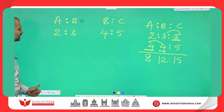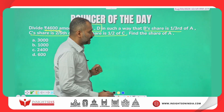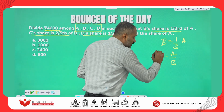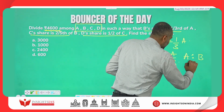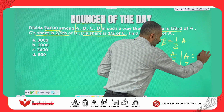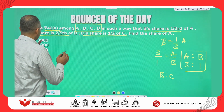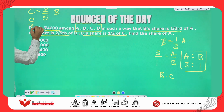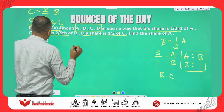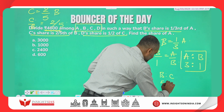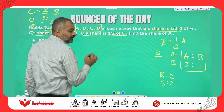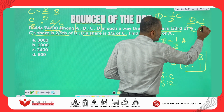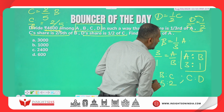Now we will apply this in the given question. It says B's share is one third of A, so A by B becomes 3 by 1, which means A is to B are in the ratio 3 is to 1. Similarly, C's share is 2 fifth of B — C by B becomes 2 by 5, where B is 5 and C is 2. And D's share is half of C — D by C equals 1 by 2, where C is 2 and D is 1.